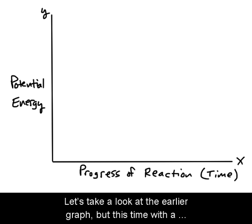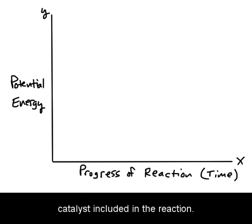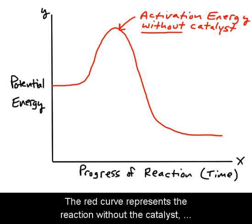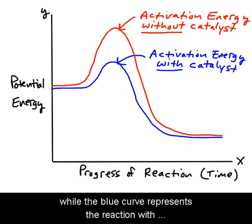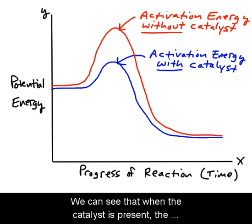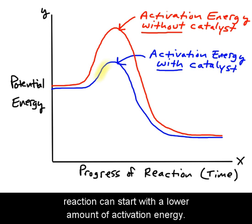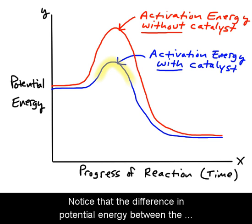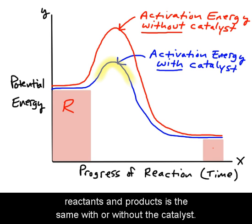Let's take a look at the earlier graph, but this time with the catalyst included in the reaction. The red curve represents the reaction without the catalyst, while the blue curve represents the reaction with the catalyst present. We can see that when the catalyst is present, the reaction can start with a lower amount of activation energy.